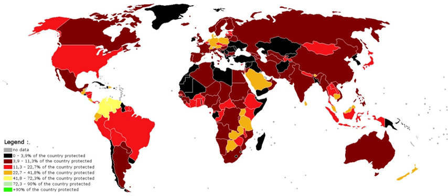Protected areas or conservation areas are locations which receive protection because of their recognized natural, ecological or cultural values. There are several kinds of protected areas, which vary by level of protection depending on the enabling laws of each country or the regulations of the international organizations involved.